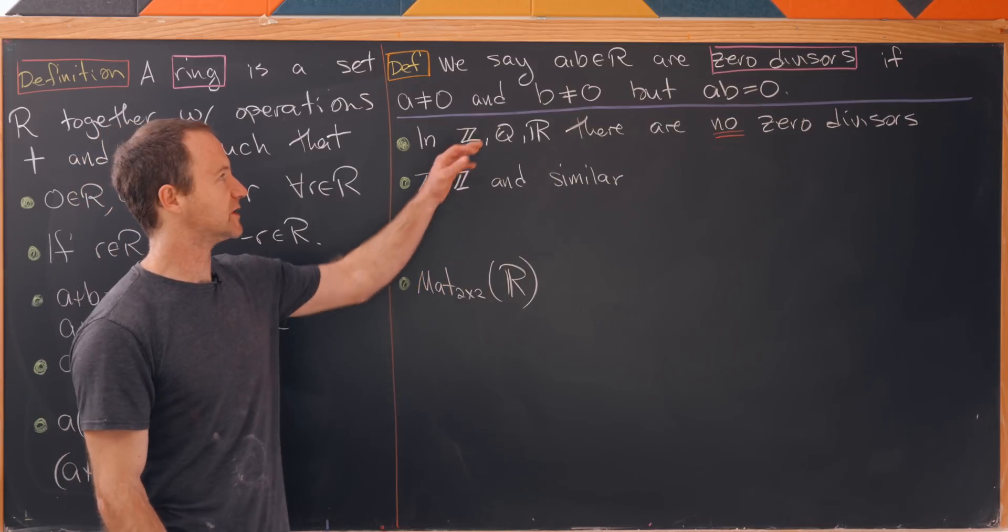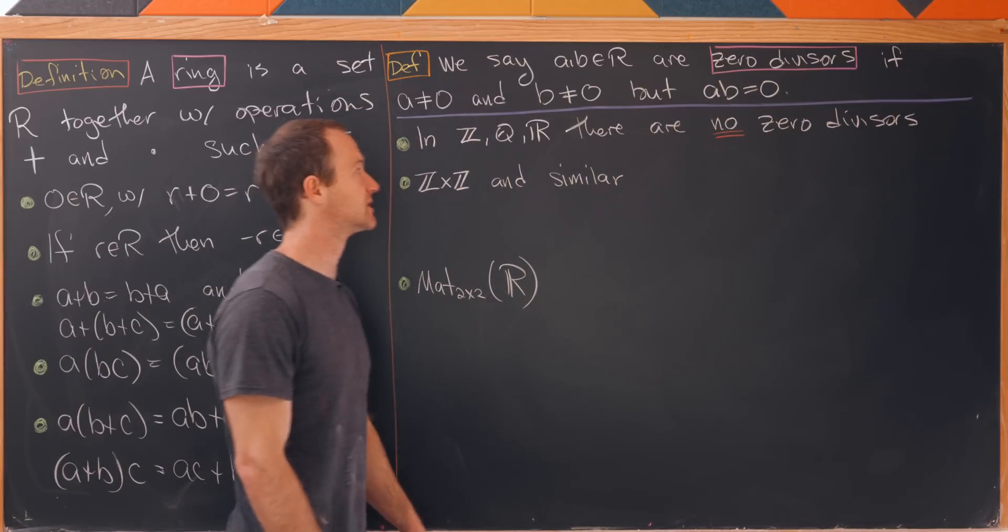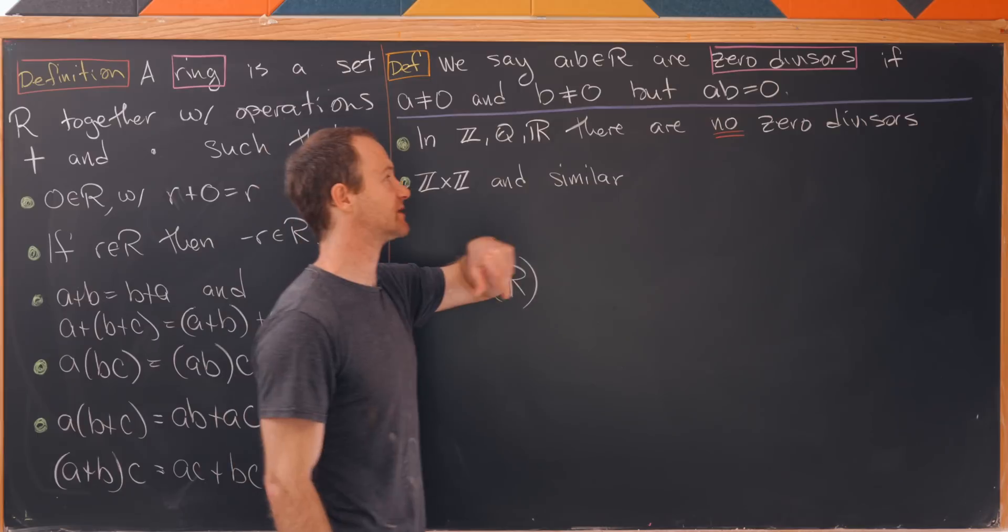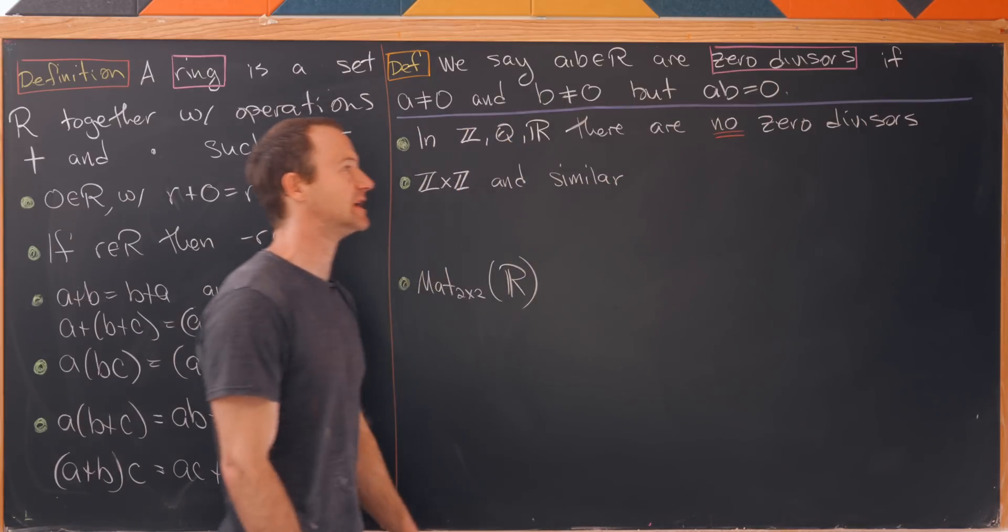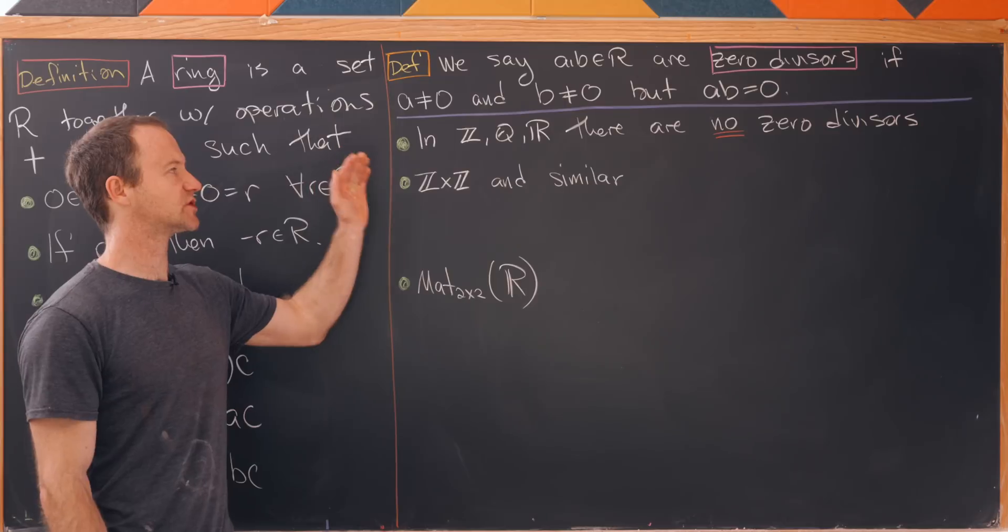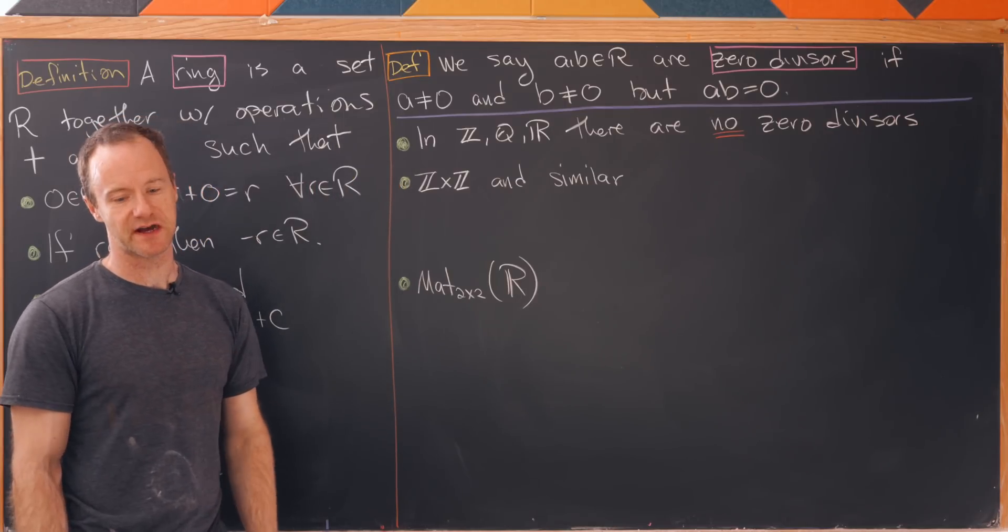So given a ring R we say that elements a and b are zero divisors if a is not equal to zero, b is not equal to zero, but a times b is equal to zero. So let's notice in the integers or the rational numbers or the real numbers there are no zero divisors.